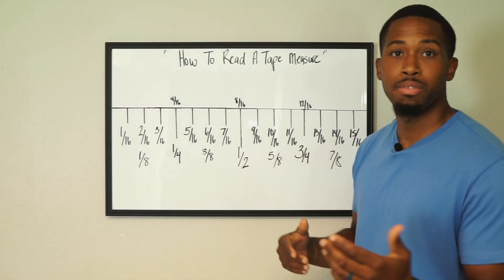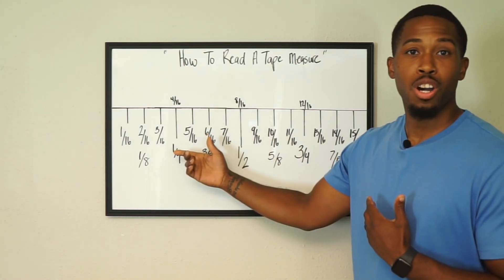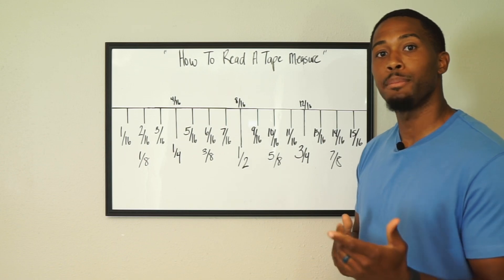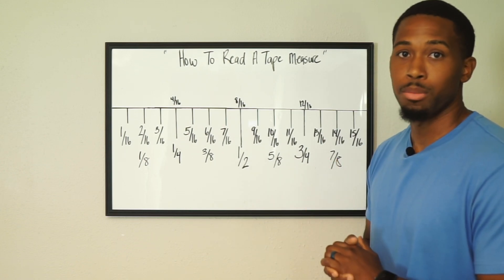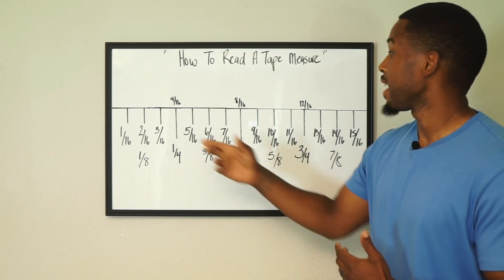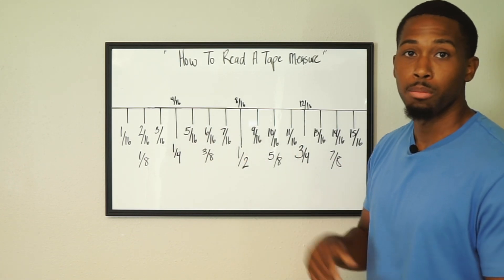Now the ones that we're going to simplify will be the even numbers. So starting off, we'll start with two sixteenths. Now one thing you should know is anything you do to the top number, you have to do to the bottom number. So we're going to simplify two sixteenths, so half of two is one, and half of sixteen is eight. We only brought it down one time.